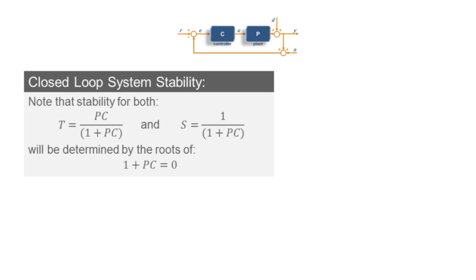In terms of the frequency response, this expression will be zero if and only if the open-loop transfer function PC happens to be equal to negative 1. I mean, real negative 1, or minus 1 comma 0 on a complex plane.